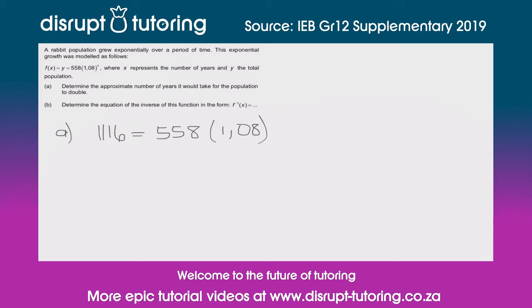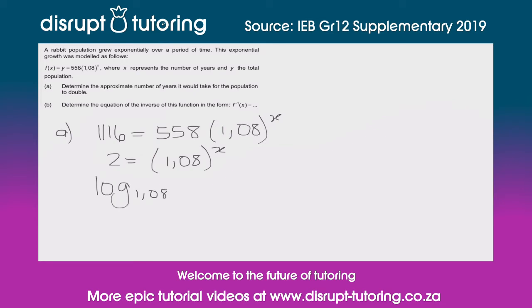The first thing you should do is divide both sides by 558, which gives you 2 = 1.08^x. Then we need to represent this using our definition of the log, which gives us: log base 1.08 of 2 = x.